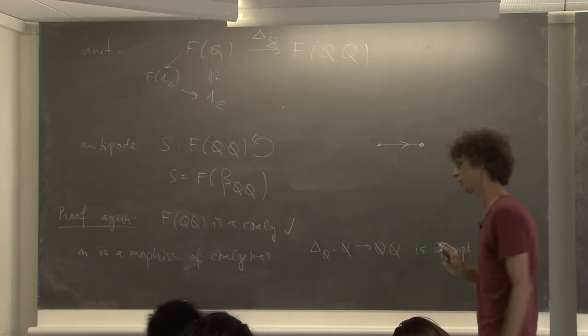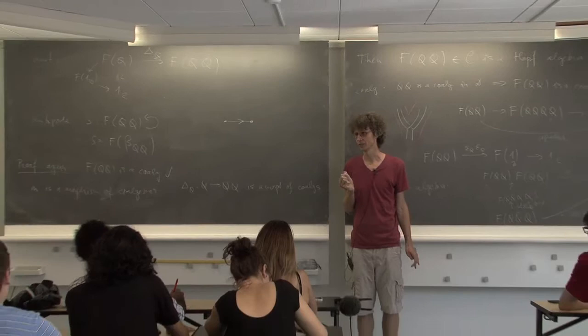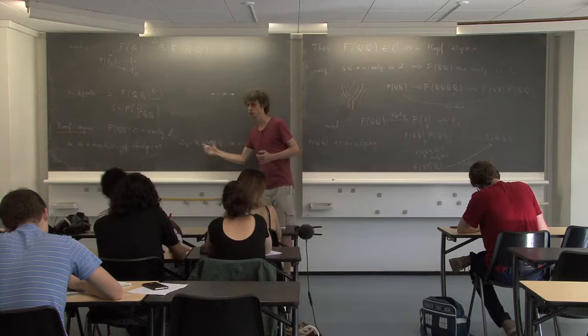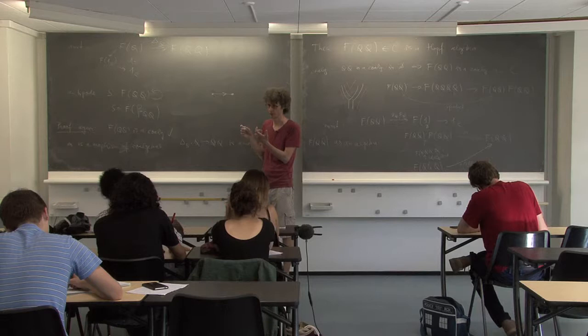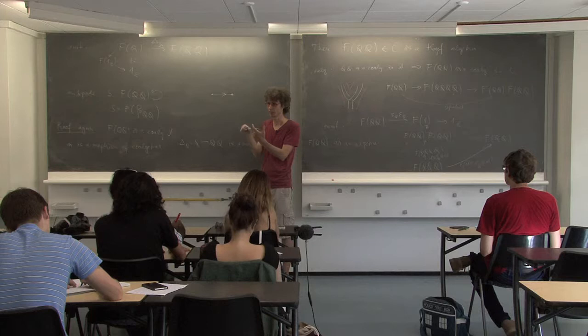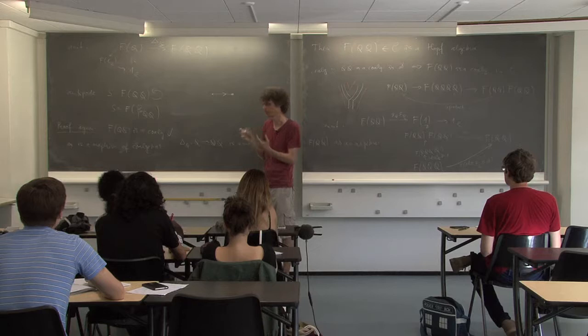M is defined as the composition of this with that. In this composition there is this strange map containing delta_Q. It uses two things: first of all that delta_Q going from Q to Q tensor Q is a morphism of co-algebras. Why is it? It's exactly co-commutativity. In the dual — in the ordinary world — when you dualize it: if you have an algebra, is the map from A tensor A to A given by the product a morphism of algebras? No, because (ab)(cd) is not equal to (ac)(bd). But if the algebra is commutative, then yes. So this is true because Q is co-commutative.